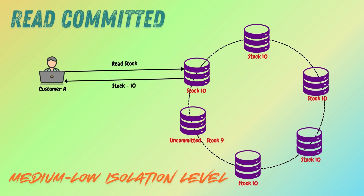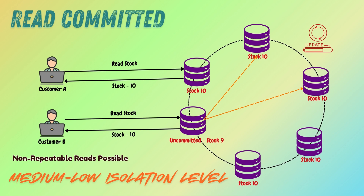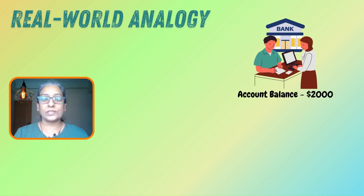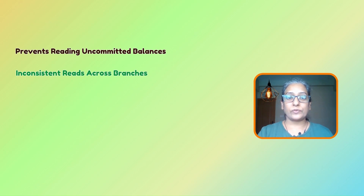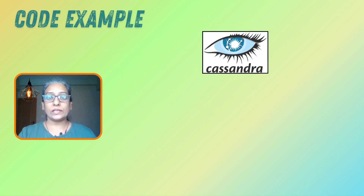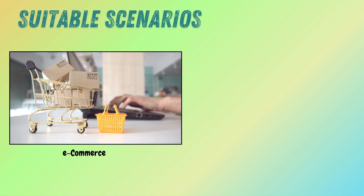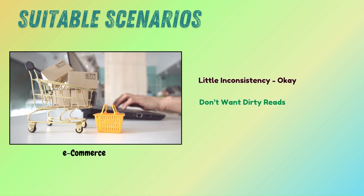Next, we have read committed. With read committed in distributed systems, only committed data is visible to other nodes, preventing dirty reads. However, non-repeatable reads are still possible because updates might not instantly synchronize across all nodes. In a distributed banking system, a customer's account balance checked at one branch may not immediately reflect deposits made at another branch due to network latency. Using a higher consistency level like Quorum in a distributed database can help simulate this behavior. Read committed is often used in systems like e-commerce where a little inconsistency is okay, but dirty reads are not acceptable.